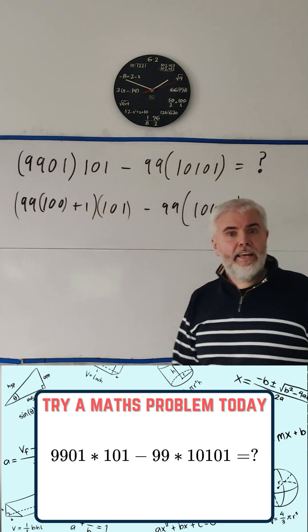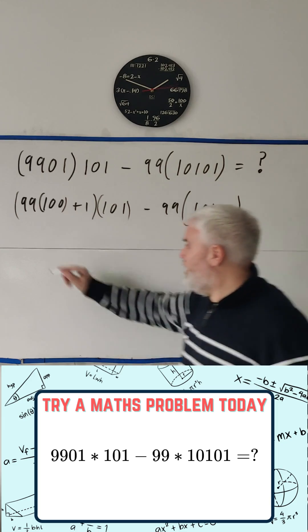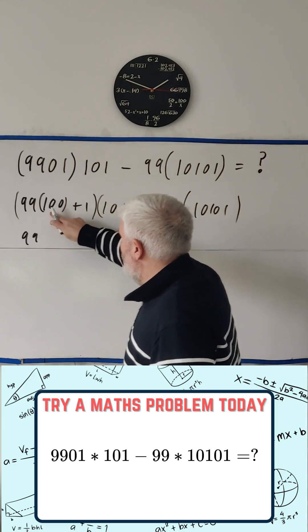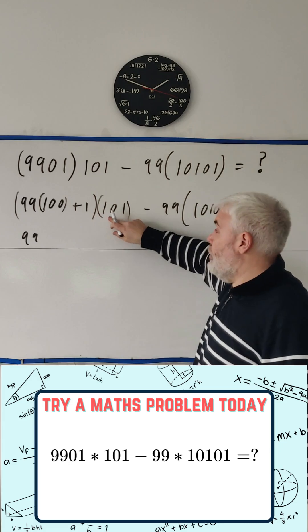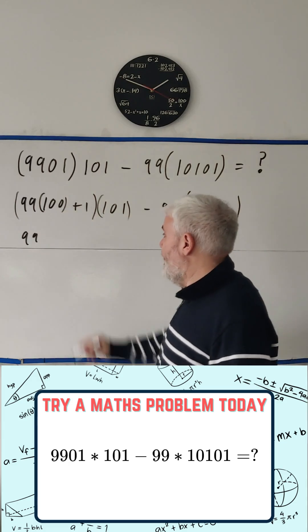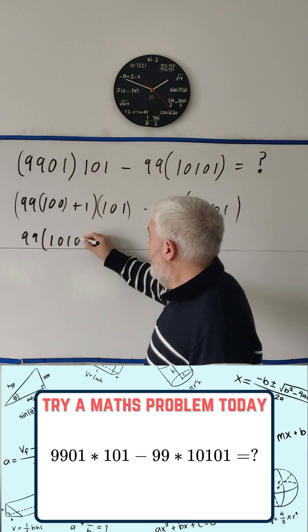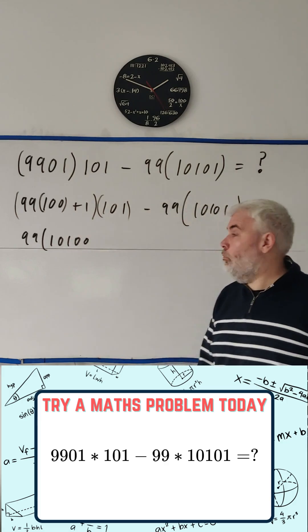If I take 99 out of everyone, what multiplies 99? This 100 and this 101 will multiply this 99. That'll get me 101 times 100, which is 10,100.